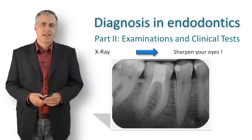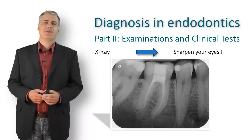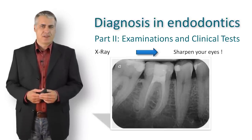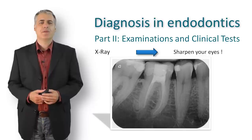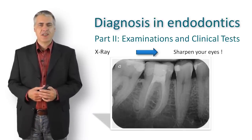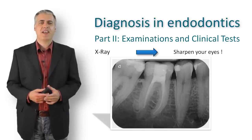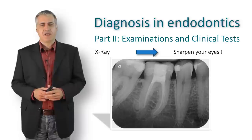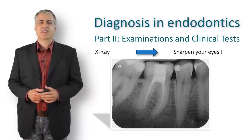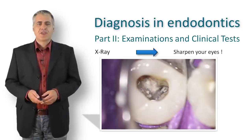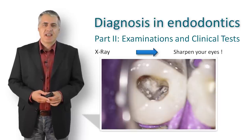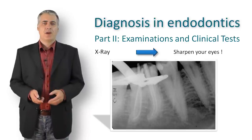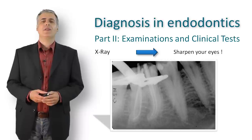Sometimes it is necessary to take pictures in different angulations. Here is a case to clarify: a lower first molar with three poorly filled canals, with the patient having severe pain. Using dental history and intraoral examination findings, this tooth was identified as the offending one. At first glance, two roots are detectable — one distal, one mesial — but looking closer, an additional root distally can be suspected. With this information, an additional distolingual root canal entrance with necrotic tissue was found.